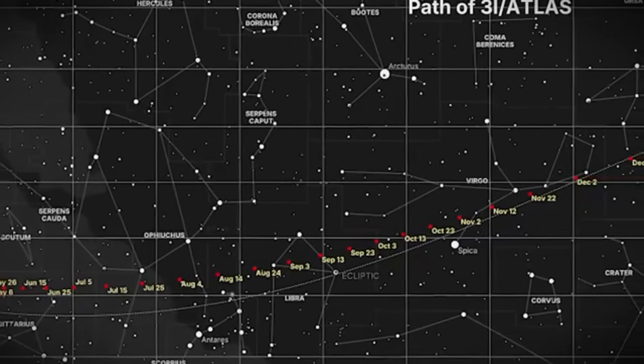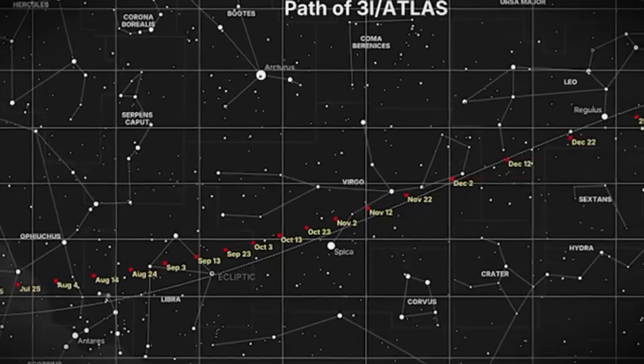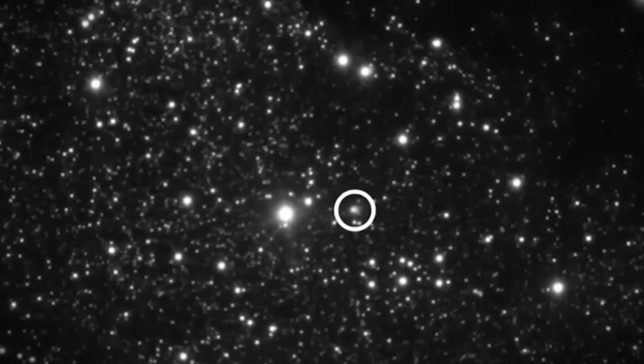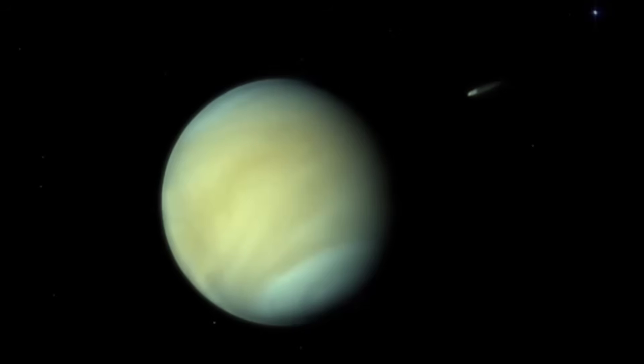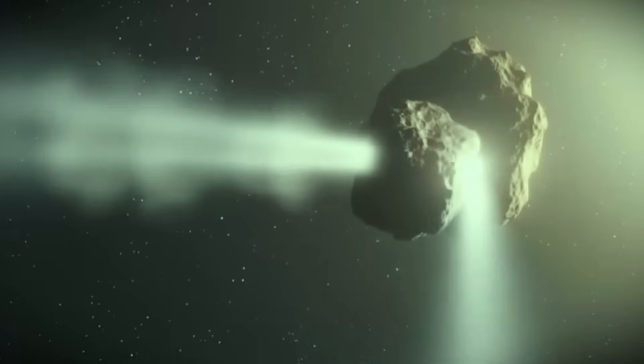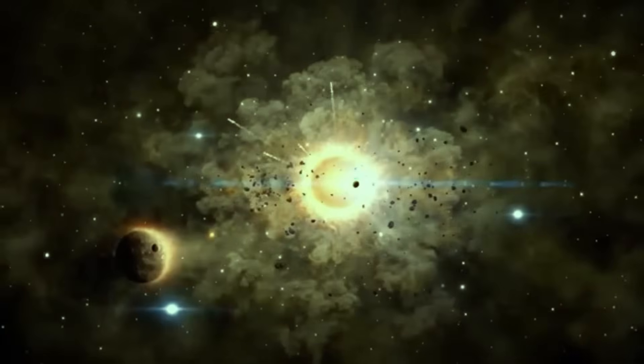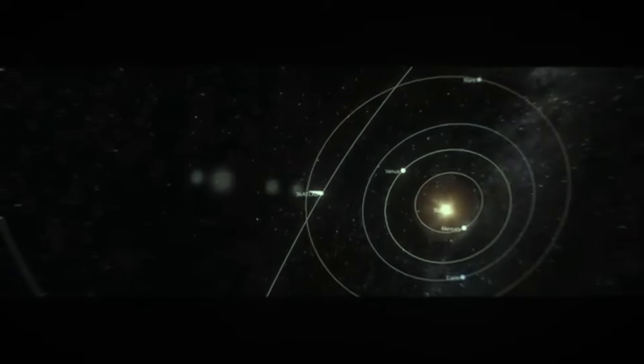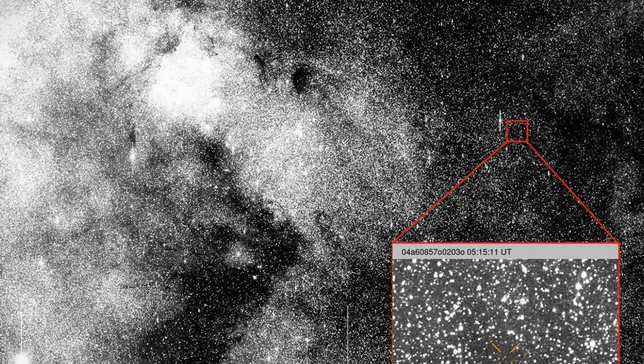Between late November 2025 and late January, dozens of ground-based telescopes, including the Hubble Space Telescope and the James Webb Space Telescope, will all be observing Atlas. On December 19th, it's making its closest approach to Earth at 167 million miles. If that massive gas cloud is there, we're going to see it.